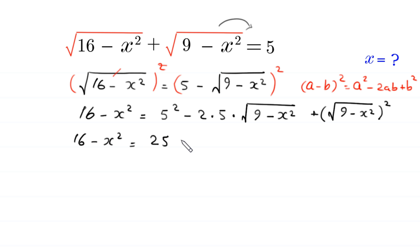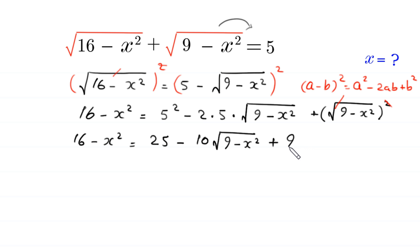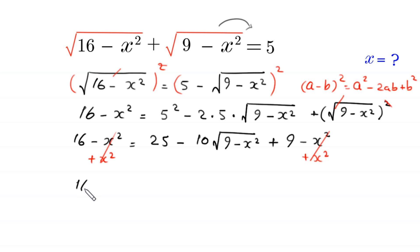So 16 minus x squared equals 25 minus 10 times square root of (9 minus x squared) plus (9 minus x squared), since the square cancels the square root. Next, we add x squared to both sides: the x squared terms cancel, and at the left hand side we are left with 16.